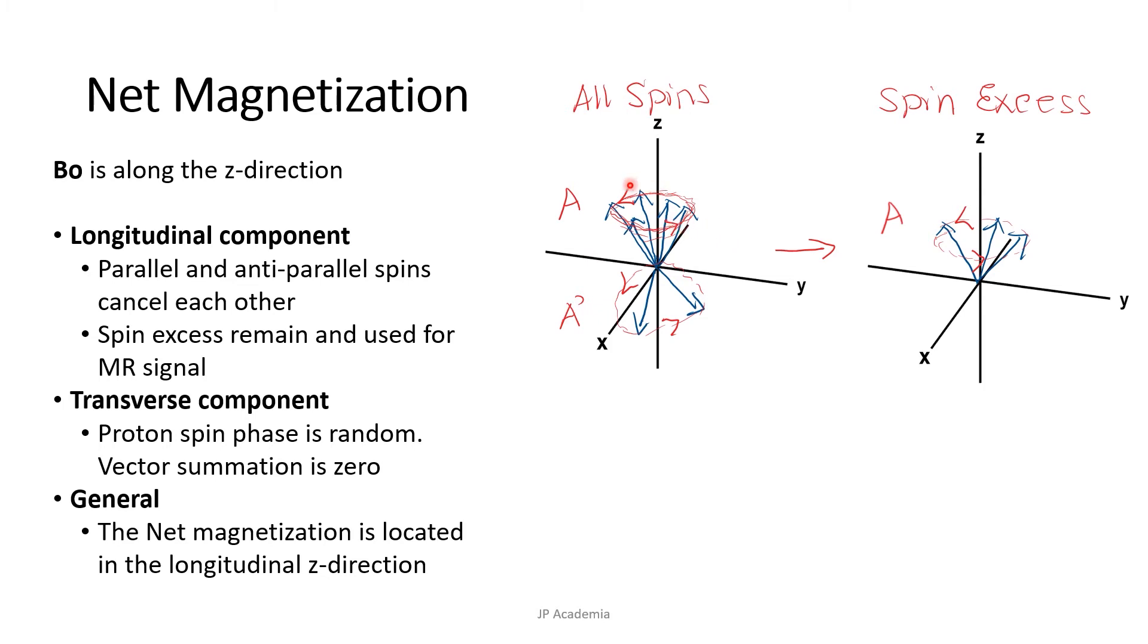I have here 5 protons pointing up, precessing parallel to the external magnetic field line along the Z direction. We have here the B naught and 2 protons pointing down, precessing anti-parallel to the magnetic field. The precession goes around in an ice cream cone shape around 45 MHz for hydrogen protons in a magnetic field strength of 1 Tesla.